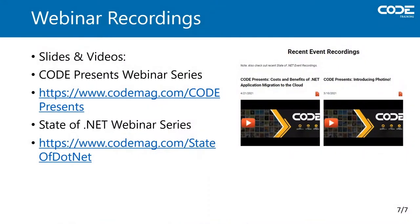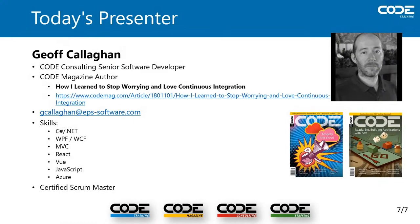Today's webinar is being recorded, and the video and slides will be available on the Code Presents page. Our presenter today is Jeff Callahan. Jeff is one of our senior software developers and has also written for Code Magazine. Jeff has worked on projects that include debugging legacy code on integrated circuits in industrial applications to creating modern desktop and web applications. He specializes in C Sharp and .NET, WPF, WCF, ASP.NET MVC, React, Vue, and JavaScript.